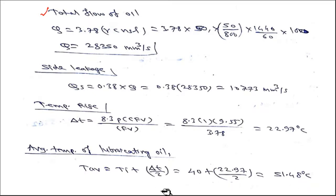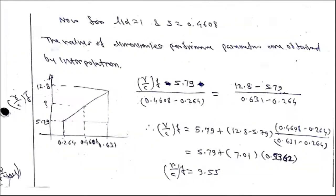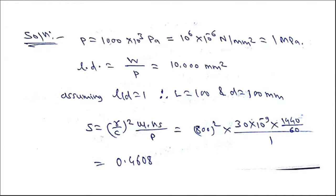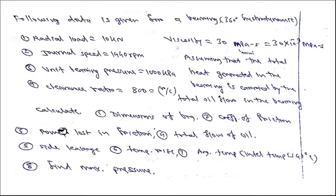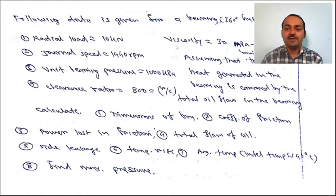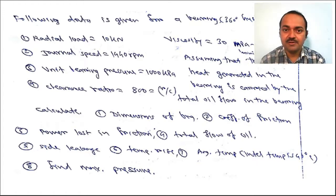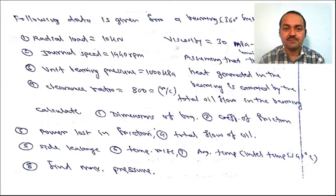This completes the second numerical. All required values have been calculated: bearing dimensions (100 × 100 mm), coefficient of friction, power loss, total oil flow, side leakage, temperature rise, average temperature, and maximum pressure. We have now reached the end of this unit with sufficient understanding to solve numericals of this kind.